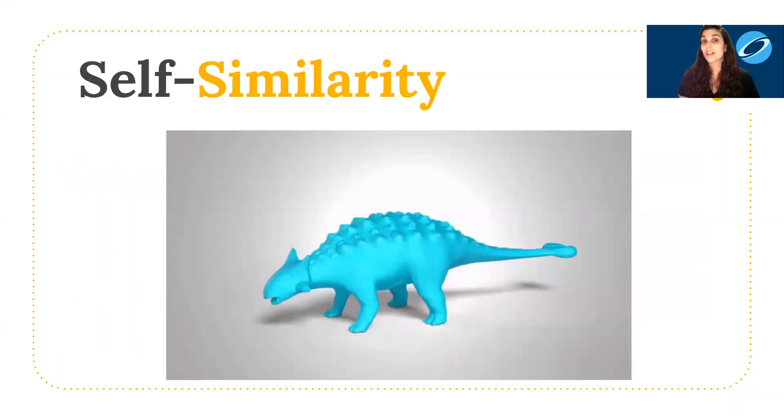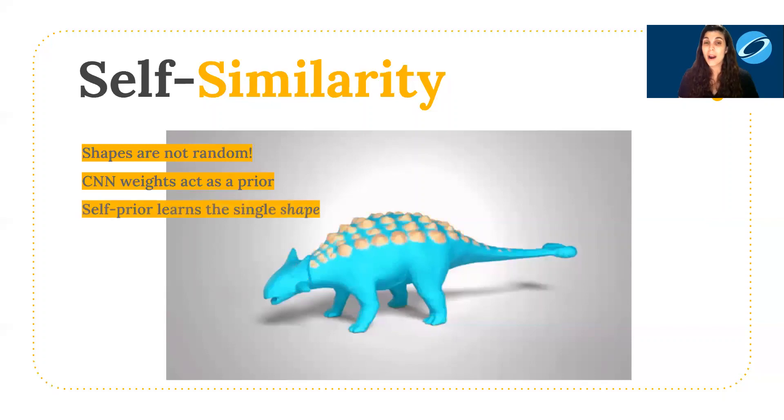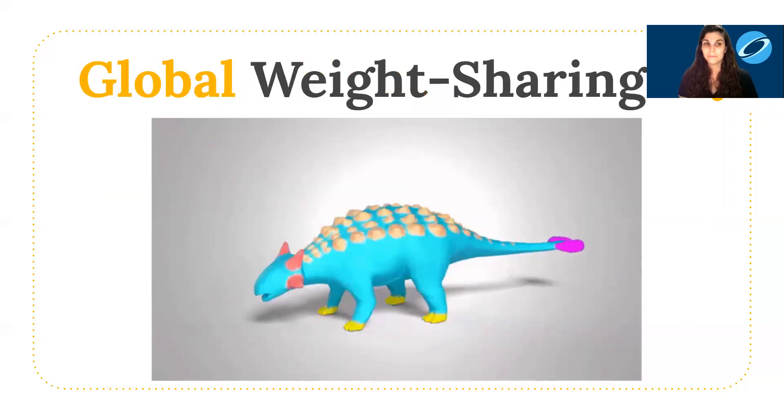This approach learns from a single input point cloud. The premise is that shapes are not random. They contain strong self-correlations across multiple scales. The optimized CNN weights act as a prior, which is what we call the self-prior. The self-prior encodes the expected shape properties and leverages the natural repetitions present within a single shape.